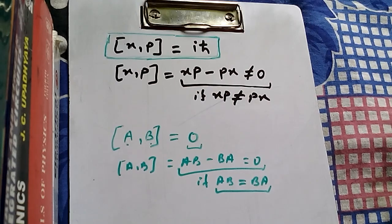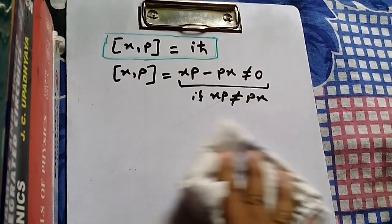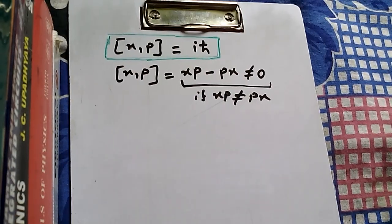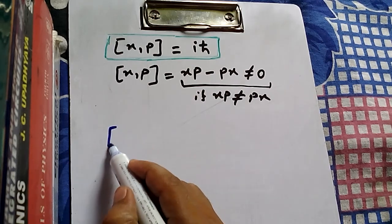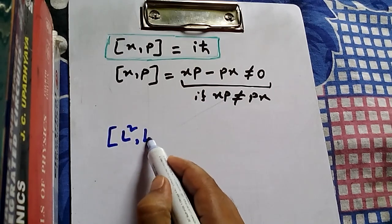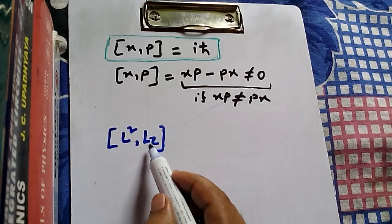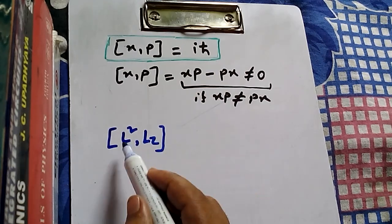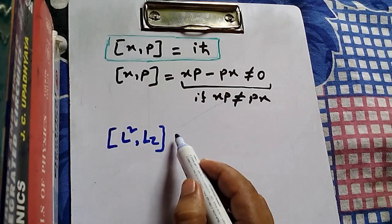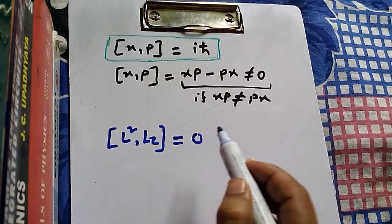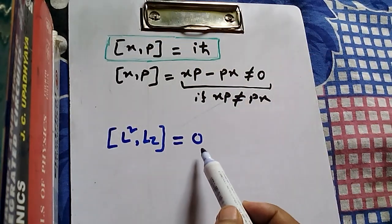Now let me show you another commutation relation: the commutation of L-squared and Lz — the orbital angular momentum squared and the Z-component of orbital angular momentum. Both are quantum mechanical operators, and the commutation relation between them in reality equals zero.